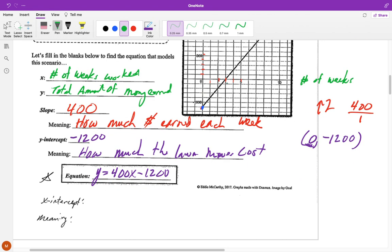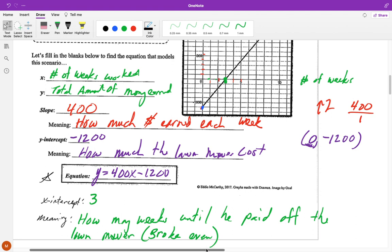Our X intercept is where we cross our X axis. So it's here. So it's one, two, three. So our X intercept is three. And the meaning of this is how many weeks until he paid off the lawnmower. But if you know like business words, you can say until he breaks even or broke even, that would be enough for me to understand what you're talking about with that as well because when you break even, it means that you're not earning or losing any money. You're at zero.